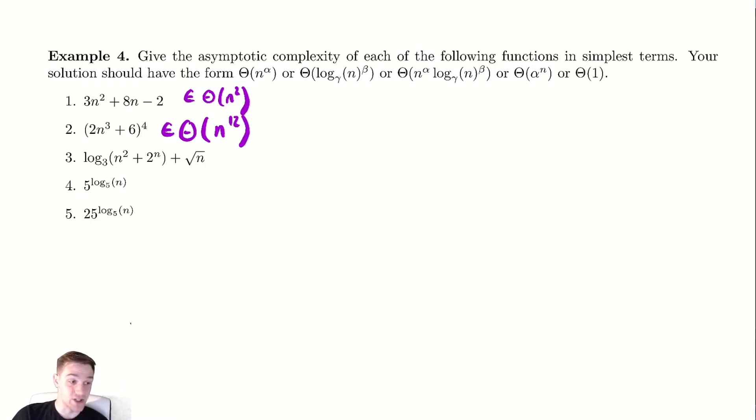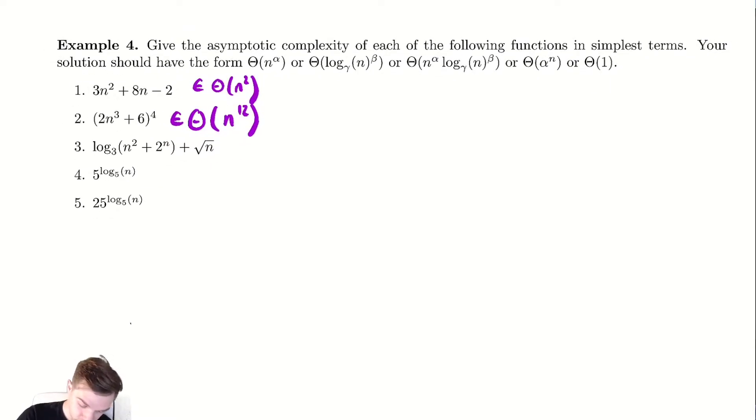Looking at our next function this looks more complicated. We need to be careful about what we do here. Looking inside of the logarithm, 2 to the n is definitely the winner there. So the log term looks like log base 3 of 2 to the n which looks like log base 3 of 2 times n. So it's some constant times n. Then the next term radical n is going to lose in our hierarchical battle against n. So this function is in Θ(n).